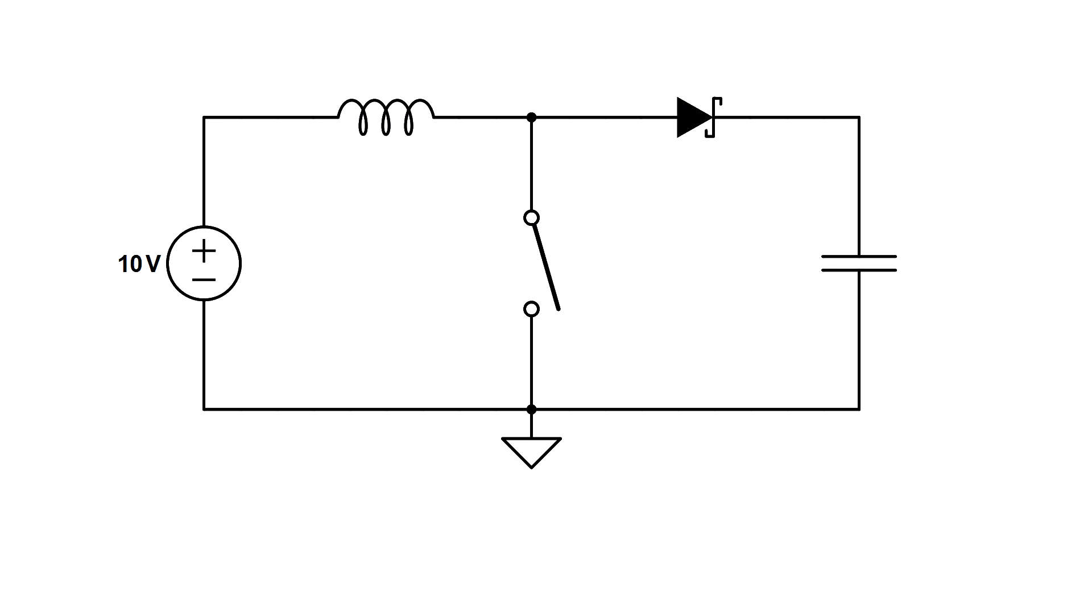Let's begin with the classic boost converter schematic. Normally you'd use a transistor for the switch here, but let's keep it simple with the switch symbol. If we start with the switch open, current from our 10 volt source will flow through the inductor, through the diode, and charge up the output capacitor. There will be a small voltage drop across the diode, let's say half a volt, so the output capacitor gets charged to 9.5 volts. So far we're dropping voltage, but that's going to change soon.